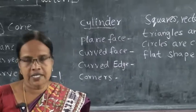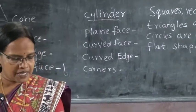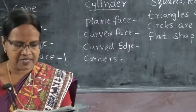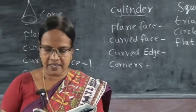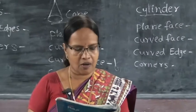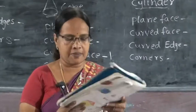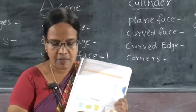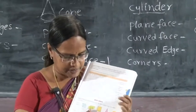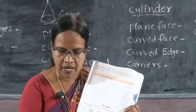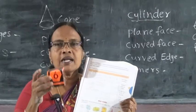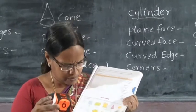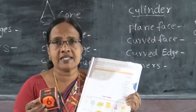Next, solid shapes. Many objects we see around us look like these shapes. They are called solid shapes. For example, the cube — these are solid objects.